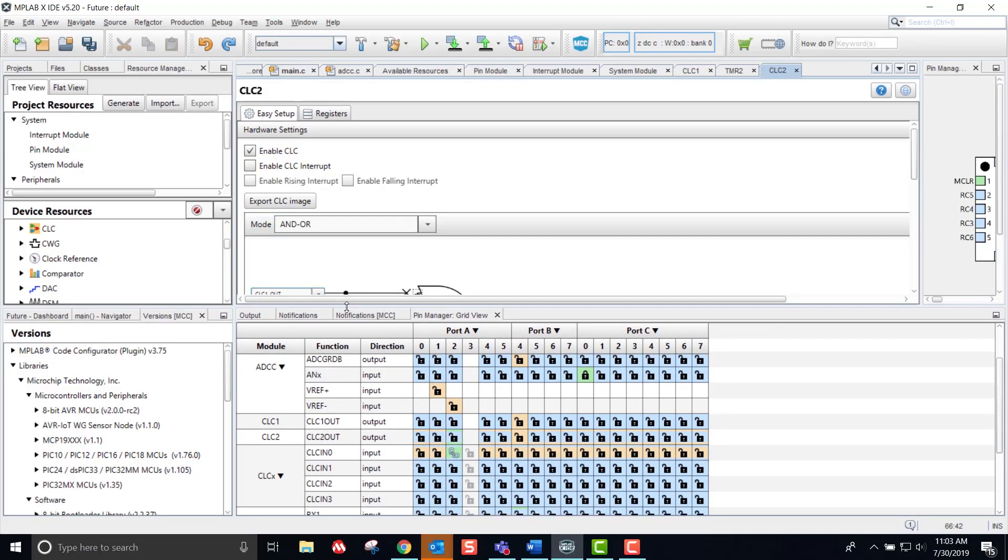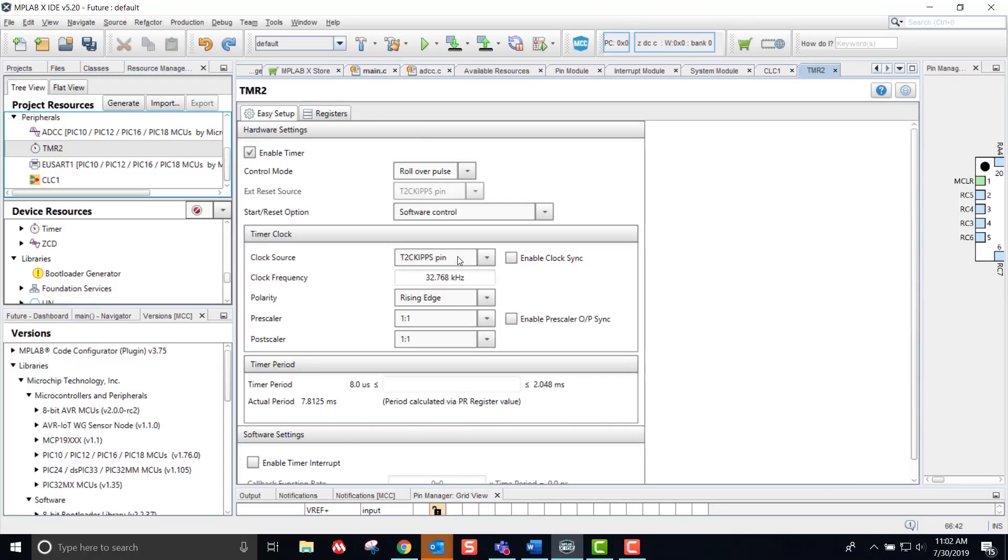Another cool feature is that the output of the CLC can be routed to almost any pin on the microcontroller using the peripheral pin select feature. Not to mention the fact that the output of the CLC can then be fed to other peripherals as well. This gives you extreme flexibility when it comes to signal routing and peripheral triggering. What more could you ask for?